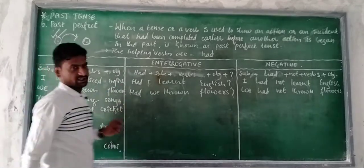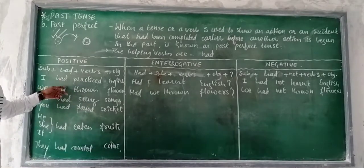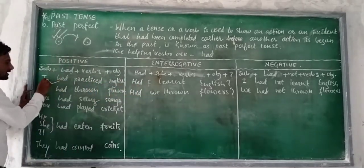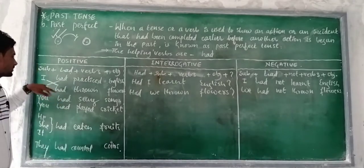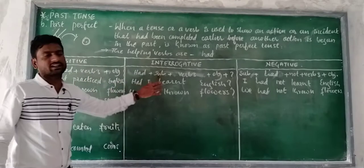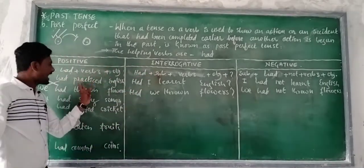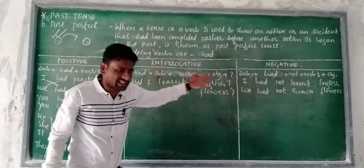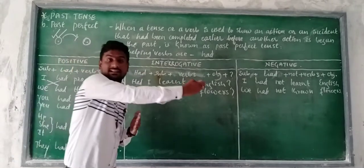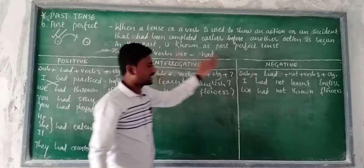For interrogative sentences, the helping verb moves to the front. For example: 'I had practiced English' becomes 'Had I practiced English?' Similarly, 'We had thrown flowers' becomes 'Had we thrown flowers?' — that is how we make interrogative sentences.